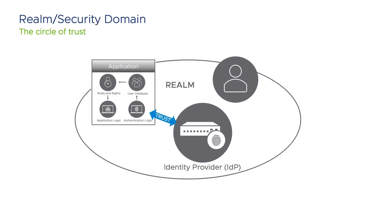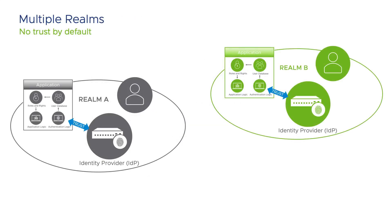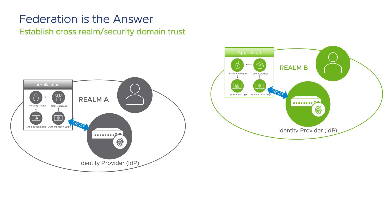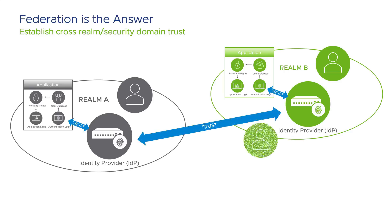You will often hear the term realm or security domain when discussing claim-based access. A realm or security domain is basically the circle of trust. Within the realm, each component trusts each other and claims are used to provide access to systems. But if you have multiple realms or security domains, by default they do not have a trust between each other. So users in realm B cannot make use of their claim issued by their local identity provider to gain access to applications in realm A. This is where federation comes into play. With federation, it is possible to establish trust between two different realms, and thereby a user in realm B can access an application within realm A.